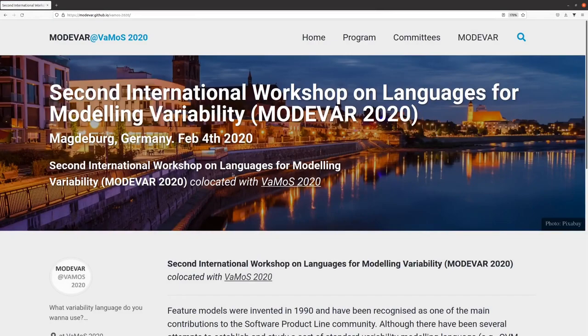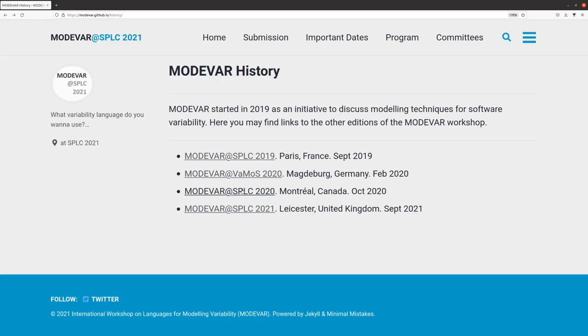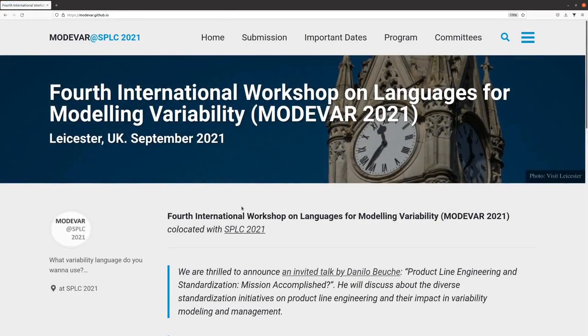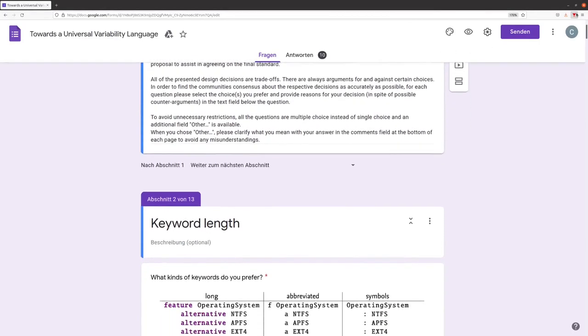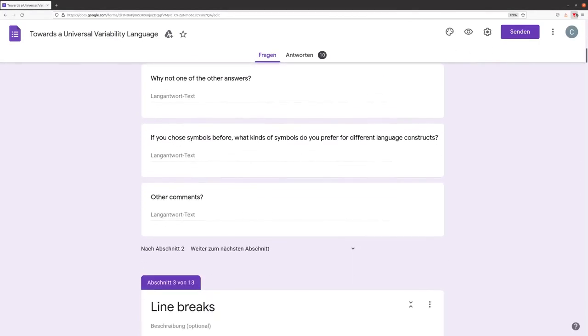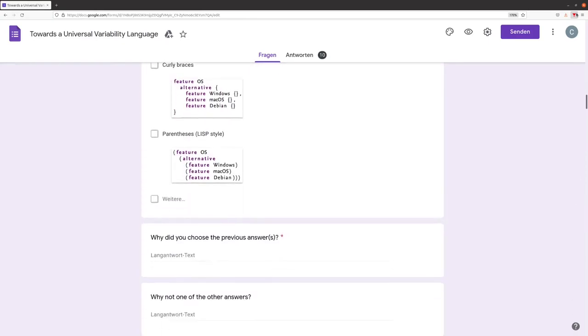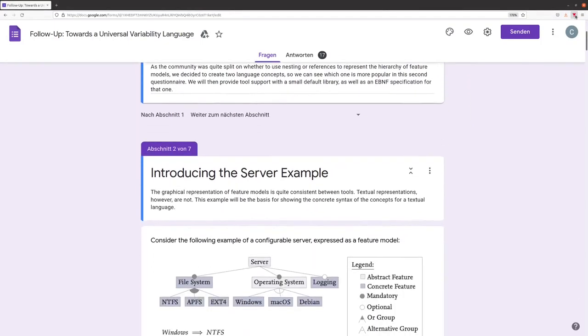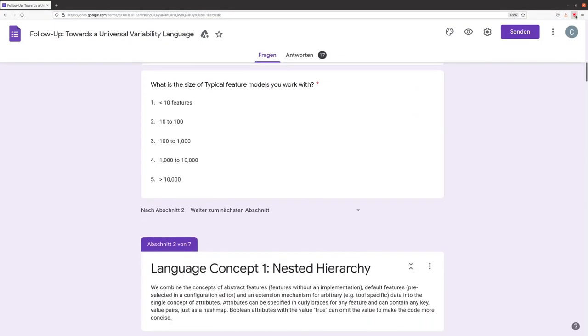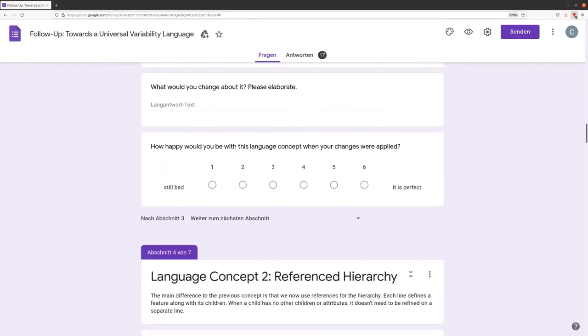The Modava initiative has the goal of finding a variability language that is widely adopted by the community and they already produced a variety of contributions towards that goal. Within the Modava initiative we developed UVL with the idea to incorporate as much feedback of the community as possible in the different stages of language development. This hopefully increases the chances of UVL being widely adopted by the community and in this video we want to share our journey with you.